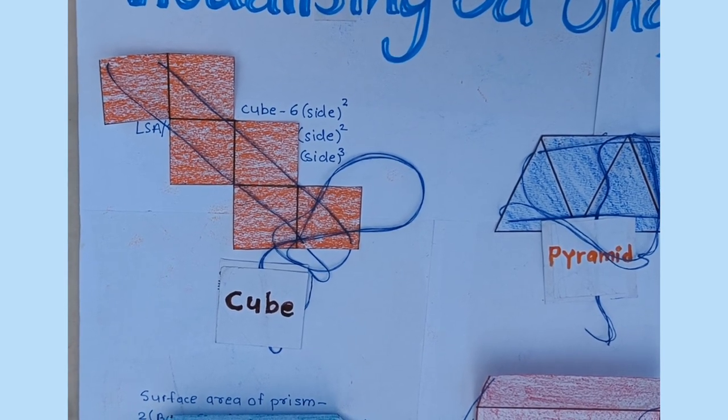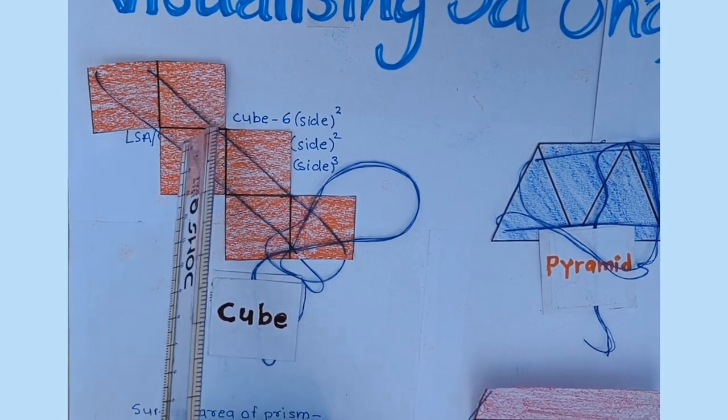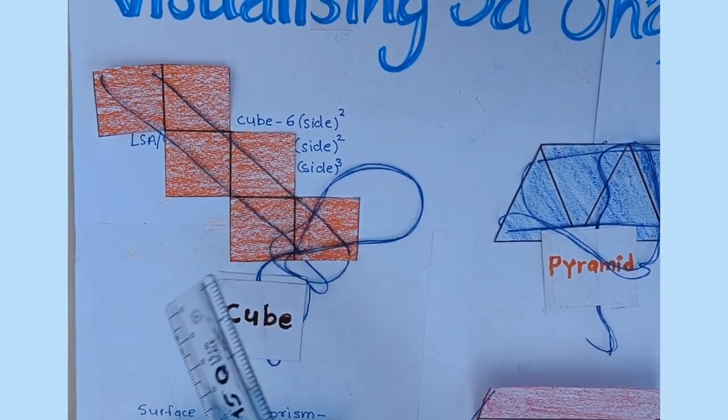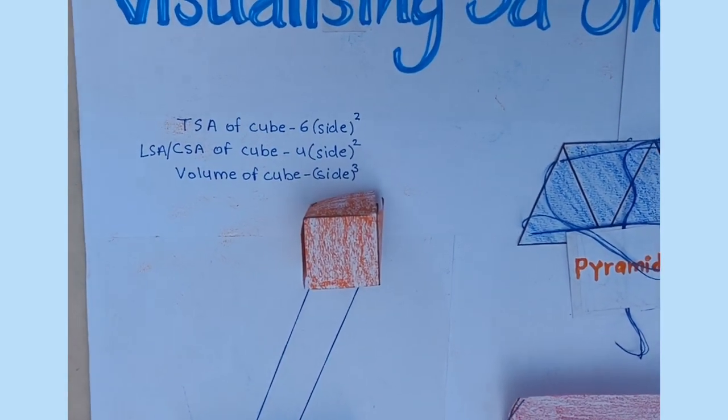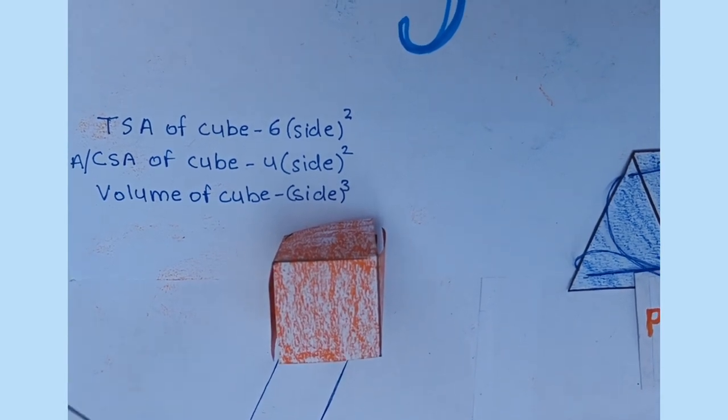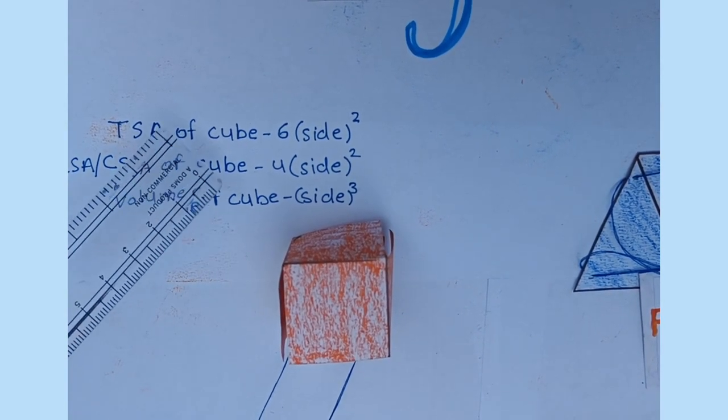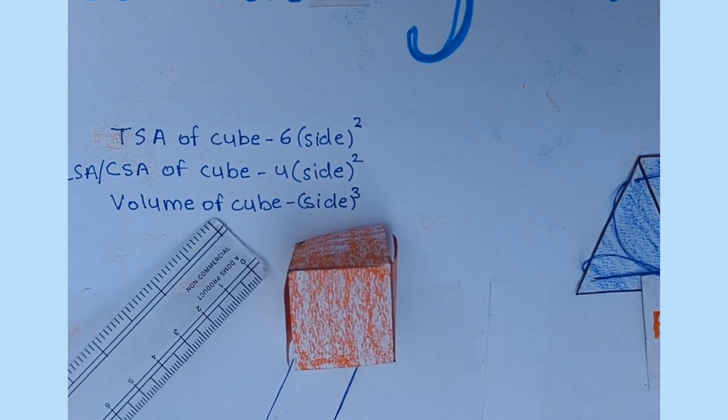First, I want to say that here is a cube which has 6 faces: 1, 2, 3, 4, 5, 6. When we fold it, it becomes a cube. And it has 6 faces, so its total surface area is 6 into side square, its curved surface area is 4 into side square, and volume is side cube.